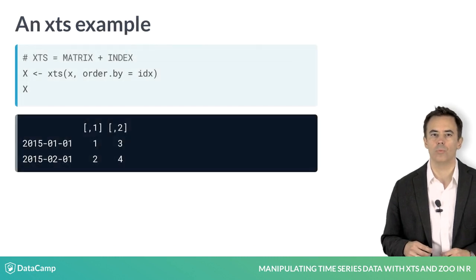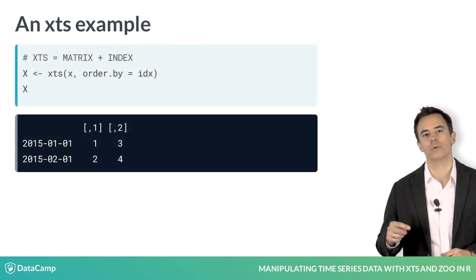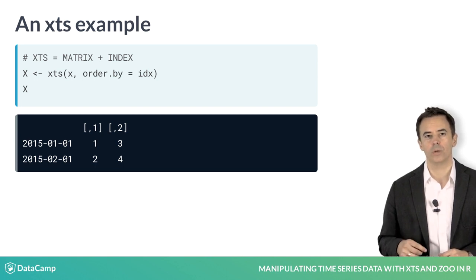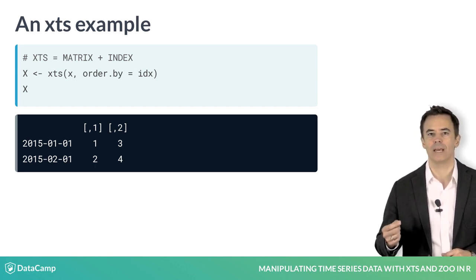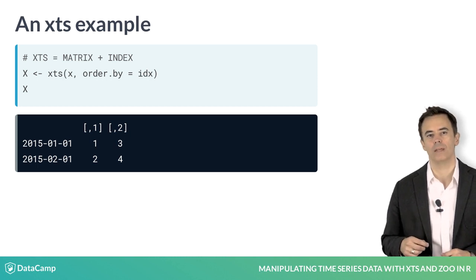At this point though, we don't have a time series. We'll need to join these to create our XTS object. To do this, we call the XTS constructor with our data X and pass our dates IDX to order.by.